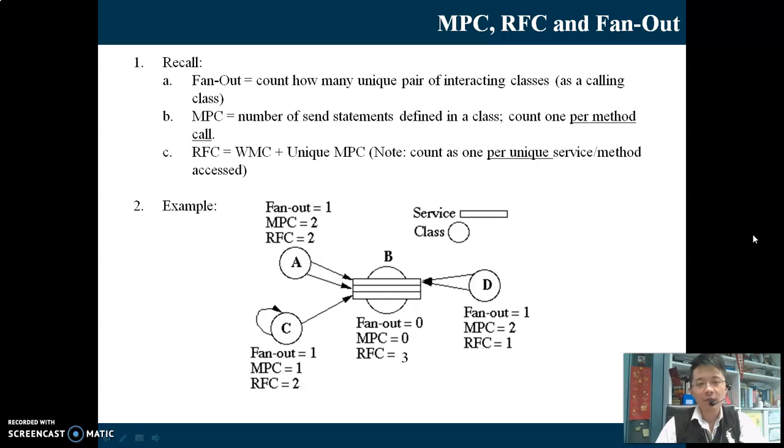In this example, we have four classes A, B, C and D as indicated by the circles. The rectangles in Class B indicate a method. There are three methods in Class B. In this exercise, we have to find out MPC and RFC of each and every class.